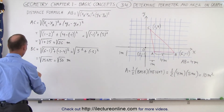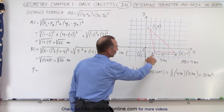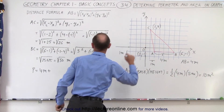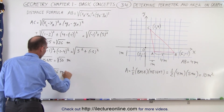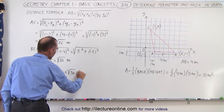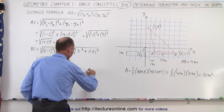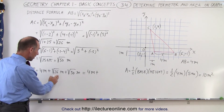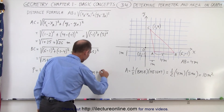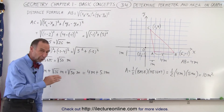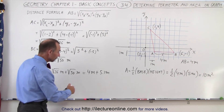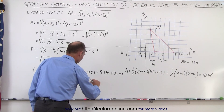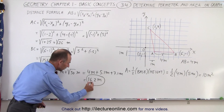Now we can find the perimeter, which equals the sum of all three sides: 4 meters plus the square root of 26 meters plus the square root of 50 meters. The square root of 26 is just a bit more than the square root of 25, which is 5, so about 5.1 meters. The square root of 50 is just above the square root of 49, which is 7, so about 7.1 meters. That gives us 4 plus 5.1 plus 7.1, which equals approximately 16.2 meters.